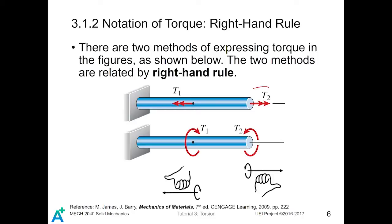One is the double arrow form, and one is the direction of the twist. Basically, as you can observe, those two kinds of notations are related by the right-hand rule.